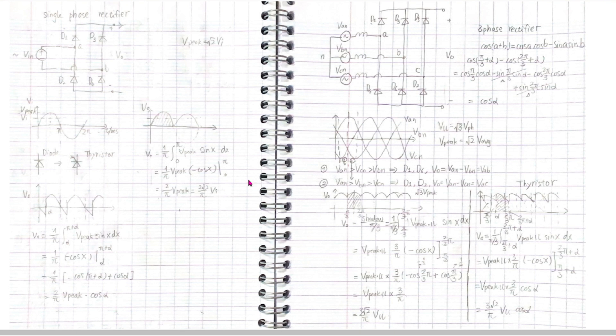Actually, we can change the diode to thyristor or IGBT. The rectifier becomes controllable. When we fire the thyristor T at the time alpha, we get the output voltage equals input voltage until pi plus alpha. Then the next pair of T are fired.